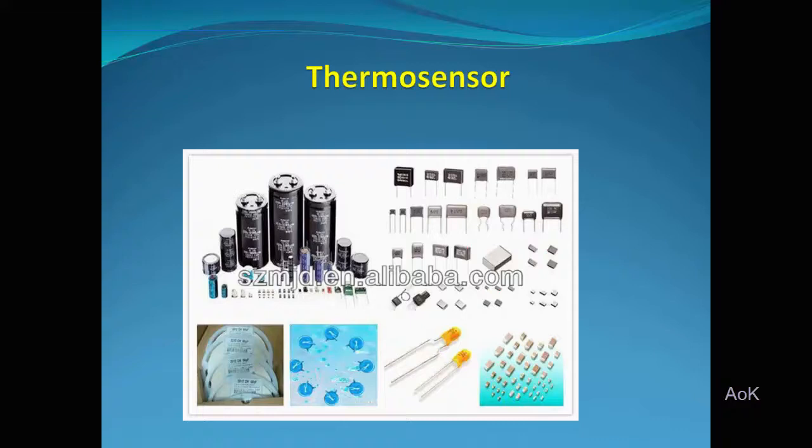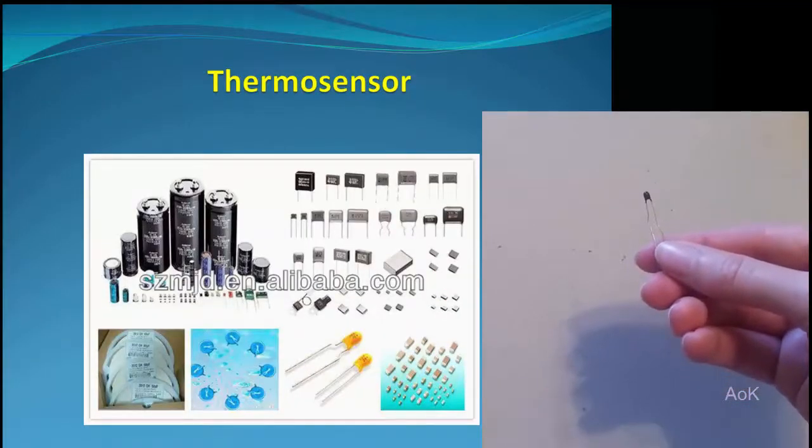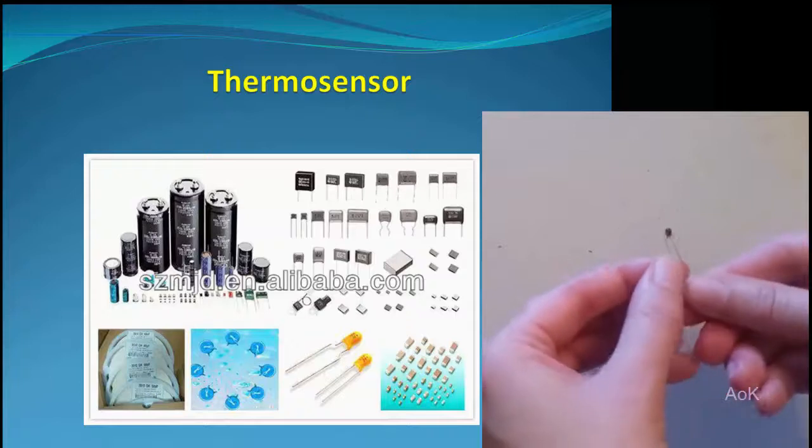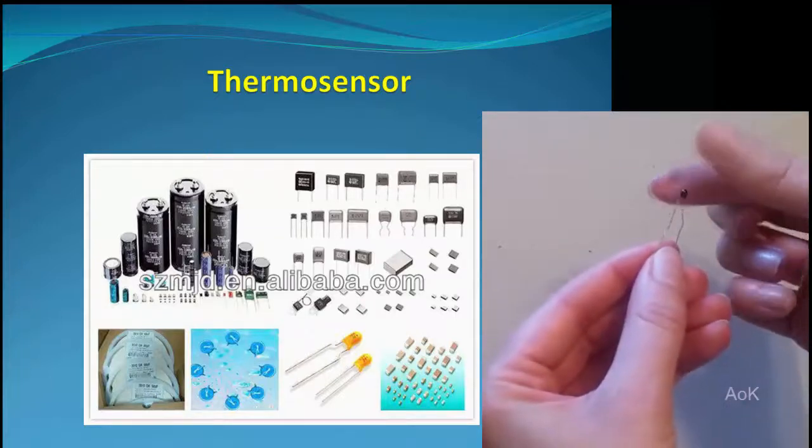You can also get various thermoresistors. Thermoresistors work just like the photosensor. It's a variable resistor with two legs, and depending on how much heat you apply to it, it'll change the resistance.